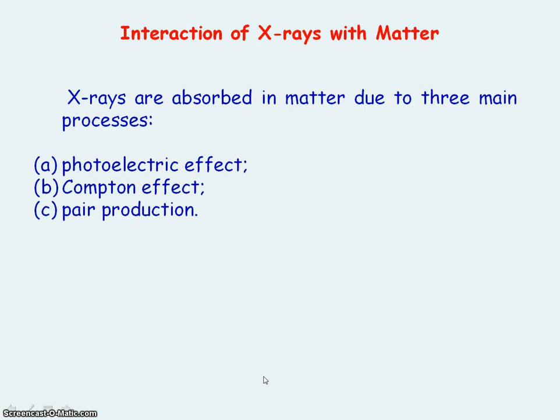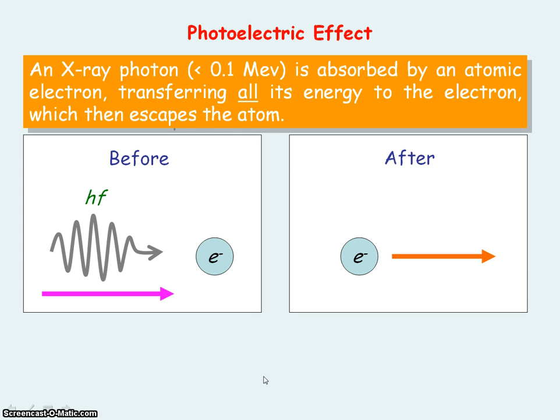X-rays interact with matter via three processes. The first is the photoelectric effect, where an X-ray photon is absorbed by an atomic electron, transferring all its energy to the electron, which then allows it to escape the atom.